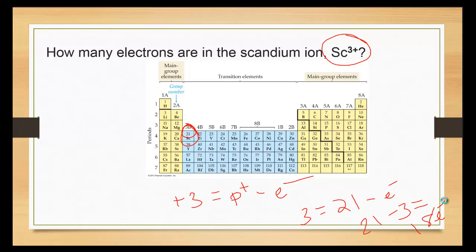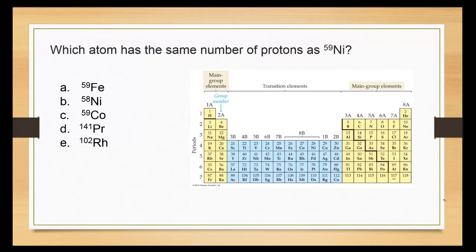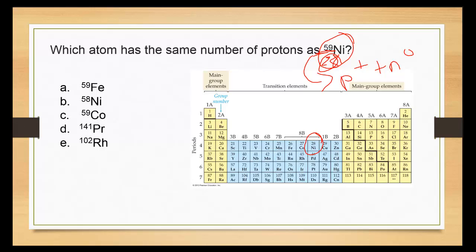Which atom has the same number of protons as nickel-59? Remember, the number on top is for isotopes — that's the protons and neutrons added together. The atomic number 28 is written on the bottom and identifies the specific element. So in order to have 28 protons, it has to be nickel. It doesn't matter how many neutrons it has; what matters is the atomic number — the number of protons.